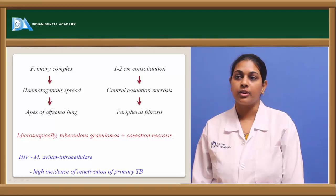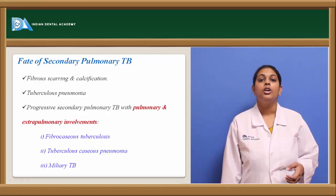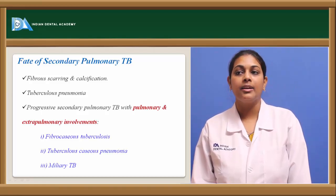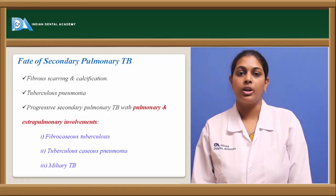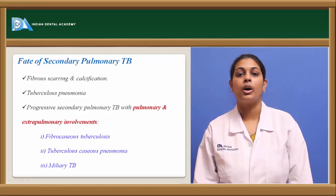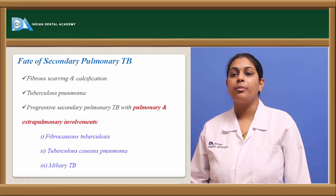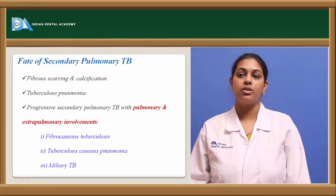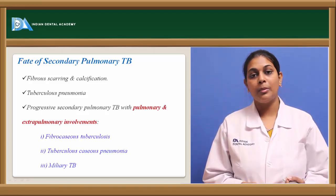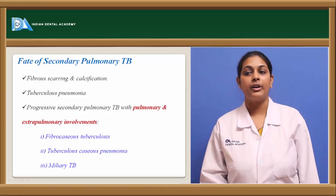Coming to the fate of secondary tuberculosis: from the tuberculosis granuloma and caseation necrosis, they may result in fibrous scarring through secondary healing. If they do not heal, they may undergo calcification. Tuberculosis pneumonia seen in primary tuberculosis is also one of the sequelae for secondary tuberculosis. The secondary lesion may progress to progressive secondary pulmonary tuberculosis, involving within the lung through the pulmonary vein or extra-pulmonary areas like tonsils, larynx, and pharynx.